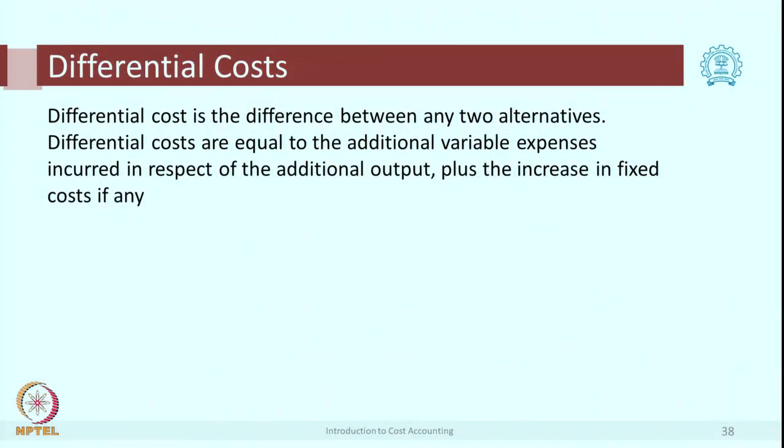There is another variant known as differential cost. If you have two alternatives and you are going to incur any extra expense by choosing one alternative, it is called a differential cost. If we take Route A the cost is 100 rupees; if we go by Route B the cost is 120 rupees. The difference between the two alternatives is 20 rupees — that is the differential cost. This is also useful in decision making.